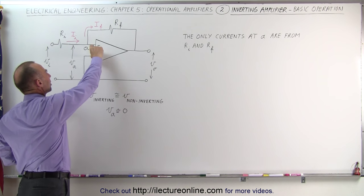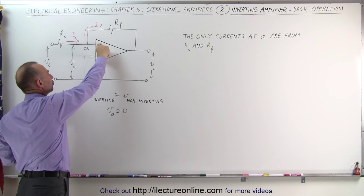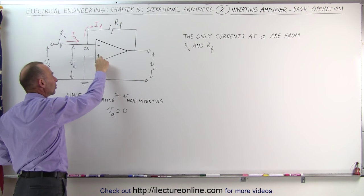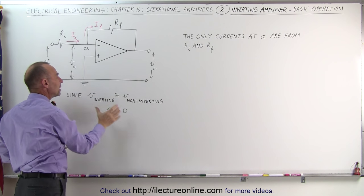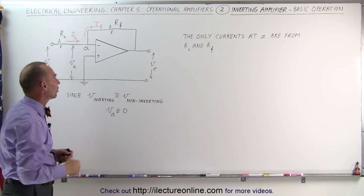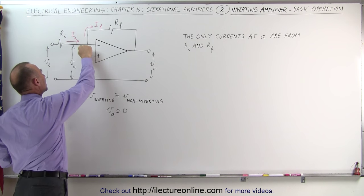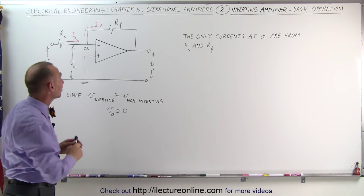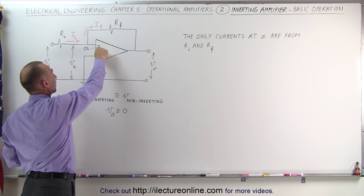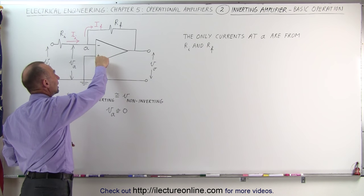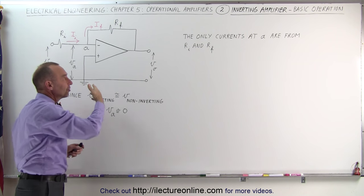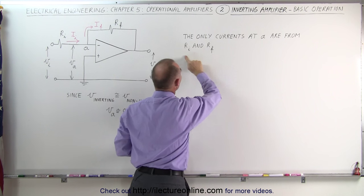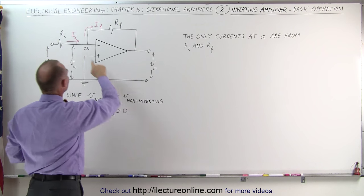We also have to realize that the potential difference between the inverting terminal and the non-inverting terminal is equal to zero, or nearly equal to zero, which means that the potential at point A must be zero as well. Also, the current inputs to the non-inverting terminal and to the inverting terminal are nearly zero, so the only currents at A are from R sub I and R sub F.